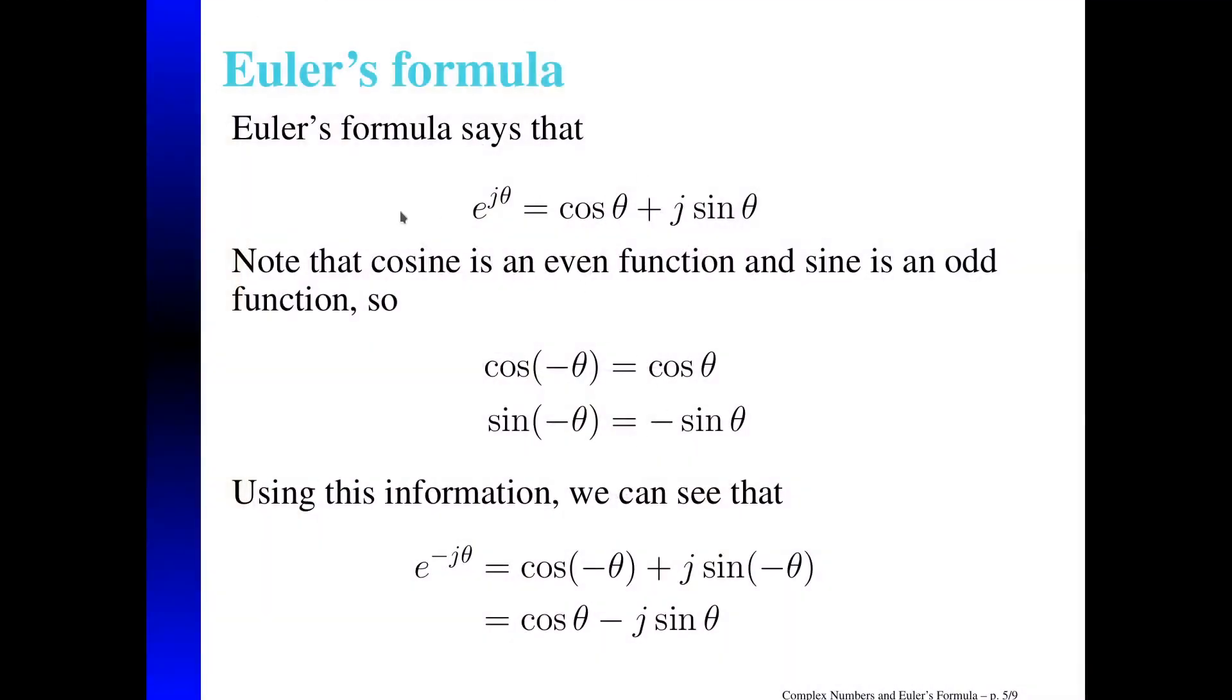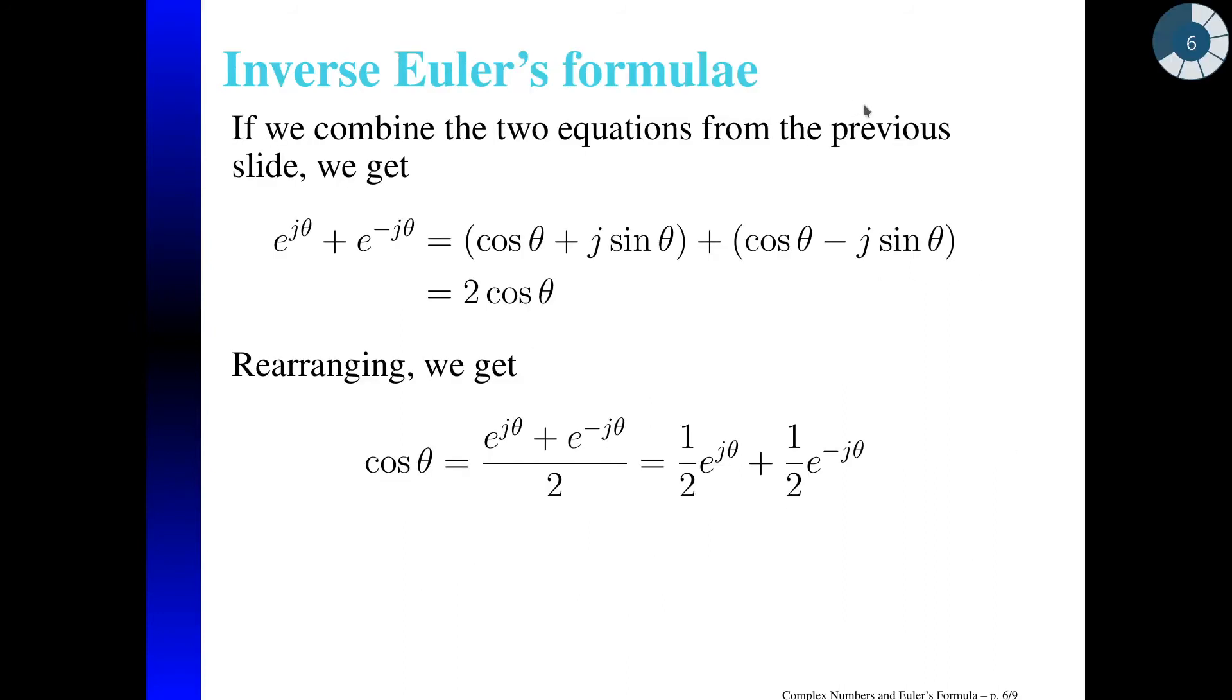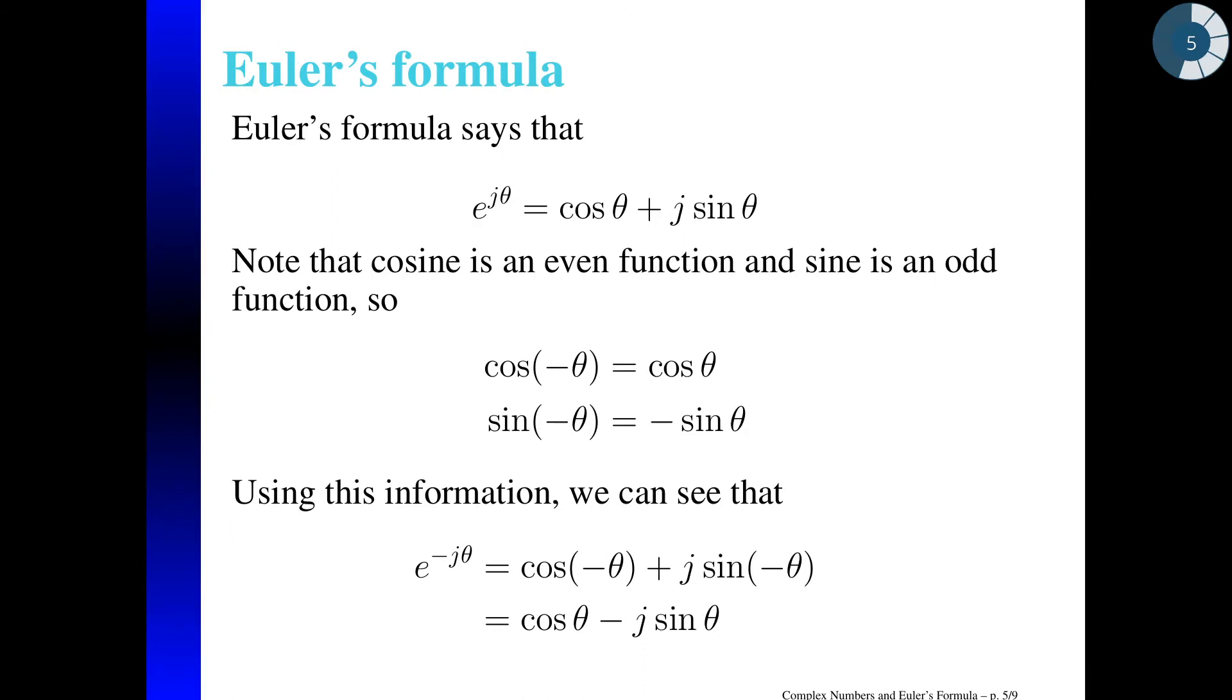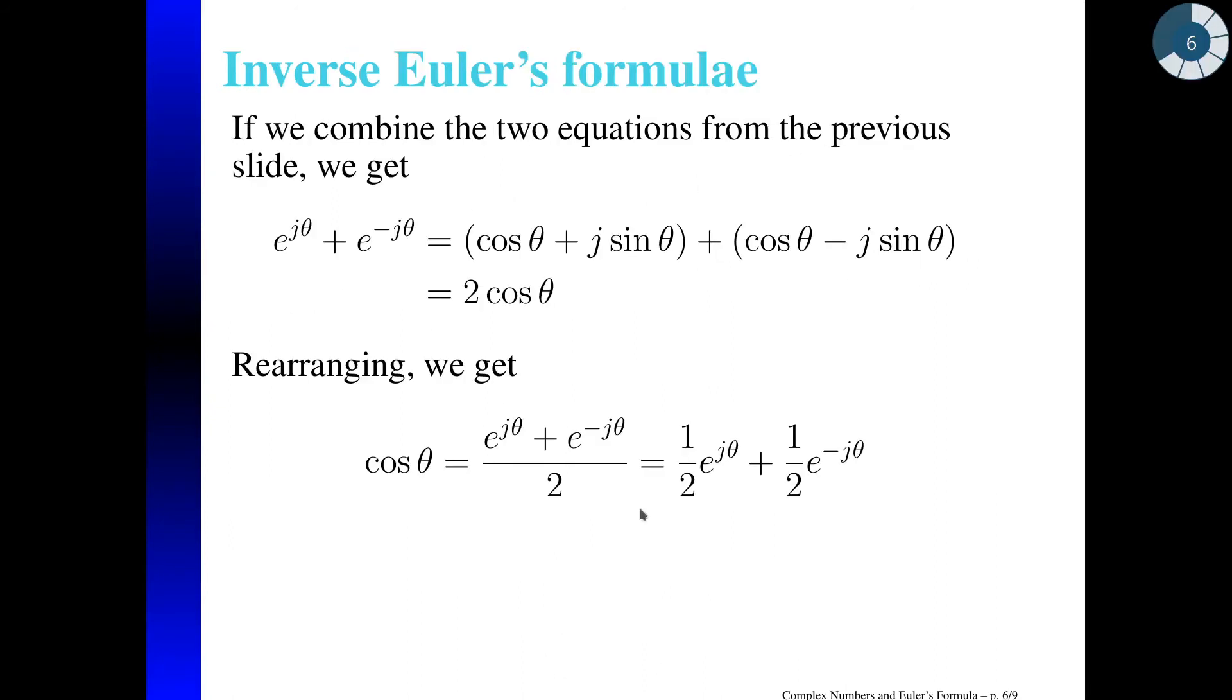So why does that matter? Well, if we take this function right here, or this relationship, and note these two facts, now if I say what's E to the minus J theta power, it simplifies down to cosine of theta minus J sine of theta. So using those two formulas, this one right here and this one right here, we can add those to have E to the J theta plus E to the minus J theta is equal to this. Adding those, we get cosine of theta plus cosine of theta is 2 cosine of theta. And J sine of theta minus J sine of theta cancels these two out. So I just add zero, so it simplifies to this.